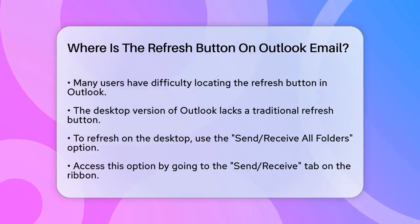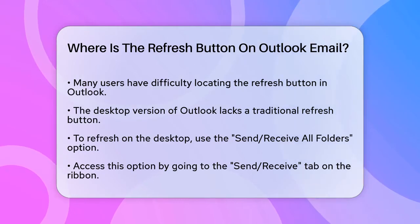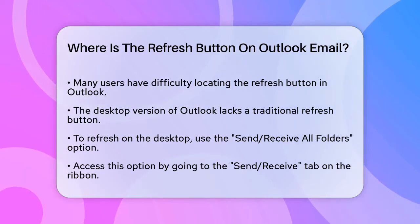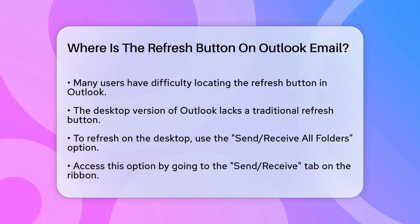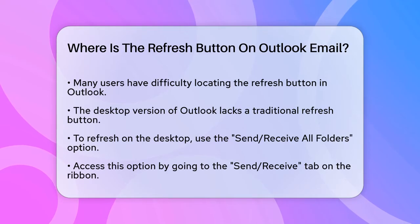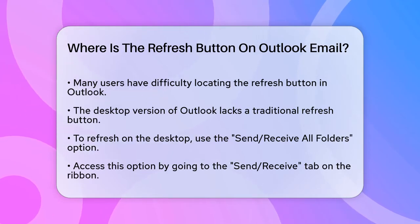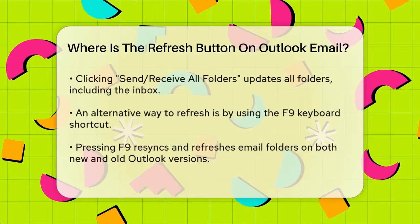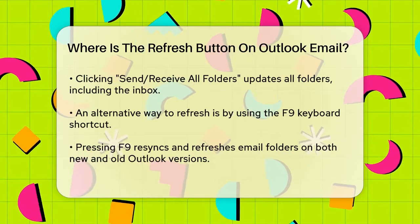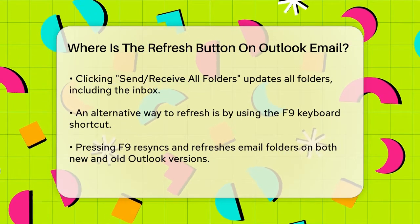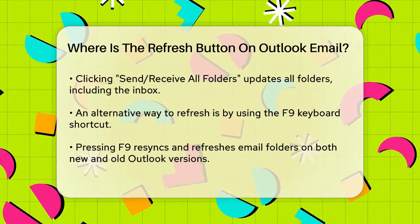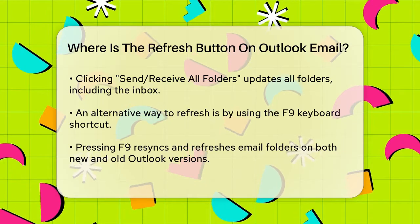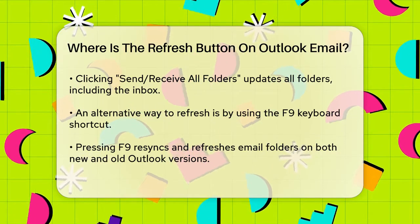Let's address the desktop version of Outlook. Here, you won't find a traditional refresh button like a circle with an arrow. Instead, you need to use the Send/Receive All Folders option. To do this, open Outlook and go to the Send/Receive tab on the ribbon. Click on Send/Receive All Folders, and this will update all your folders, including your inbox.